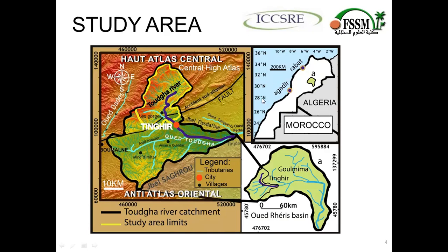We see here a Morocco map, located in the north-western part of Africa. The green shape represents the large Aris Basin, and to the east of this basin we find our sub-basin, called the Tudra River Catchment. Our study focuses on the north-western part of this catchment, from the city of Tiengheer to the north.